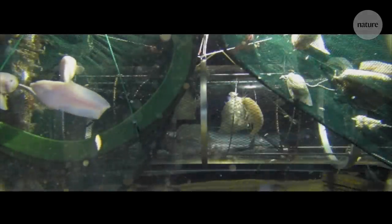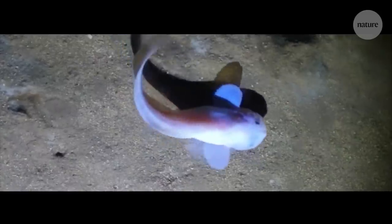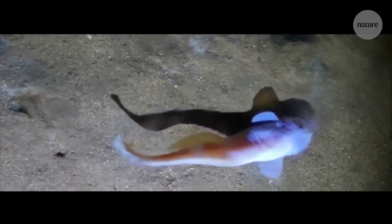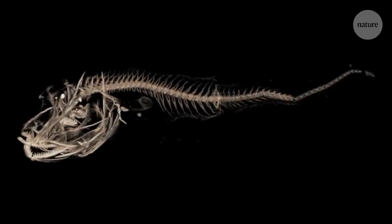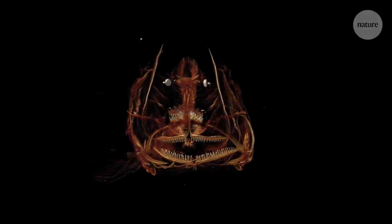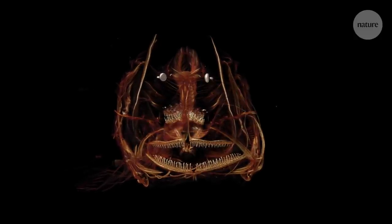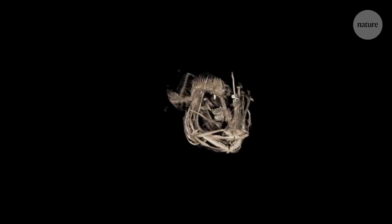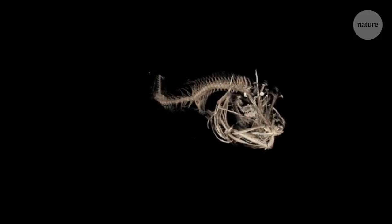To solve this problem, researchers turned to evolution. In particular, the Mariana snailfish. This soft and ghostly creature is the deepest living fish ever discovered. CT scans revealed it has an intriguing skeletal structure. Unlike most fish, the snailfish's skull is open and somewhat distributed throughout its head. It's thought that this structure helps the fish cope with pressure, and that got the robot designers thinking.